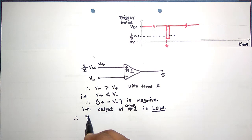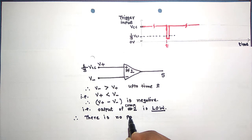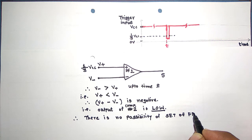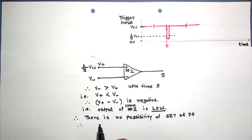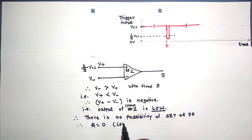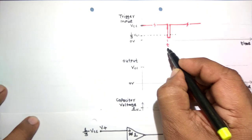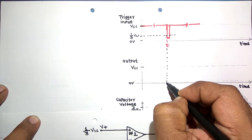Since Q equals 0, Q-bar equals 1, which is high. This high value of Q-bar is applied to the base of the discharge transistor T2 inside IC555. With Q-bar equal to 1, transistor T2 is on, so external capacitor C is connected to ground through this transistor and is in a discharged state — the voltage across the capacitor is zero. Up to time t, the voltage across the capacitor is zero, as shown in the capacitor voltage versus time graph.